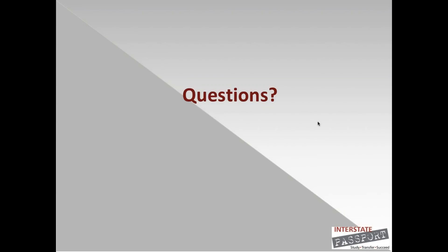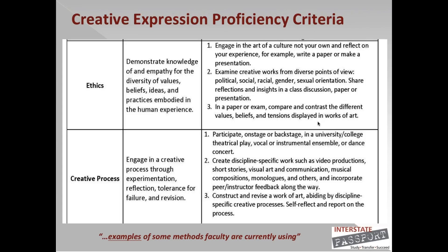Paul: I would add that when we developed the creative process outcome — to engage in a creative process through experimentation, reflection, tolerance for failure, and revision — we knew that may be a problem for some institutions that only have survey or appreciation courses and don't actually do generative work. But there was a strong feeling among all participants that just being able to talk about the creative process or analyze something in it was not enough. We all recognize that may be a challenge for some institutions. Michael: That particular creative process learning outcome is different from the other four, because it actually involves hands-on creative work.